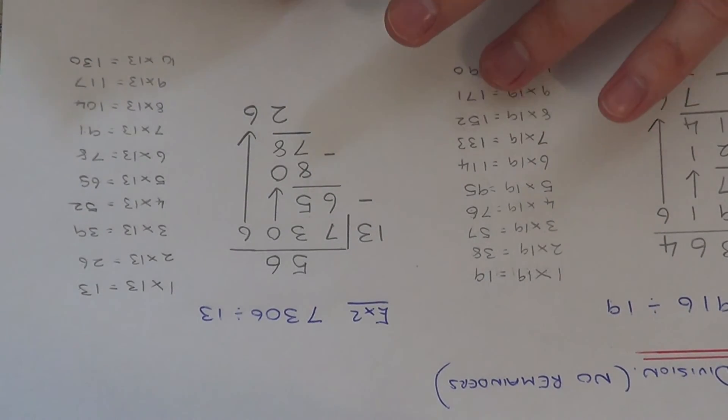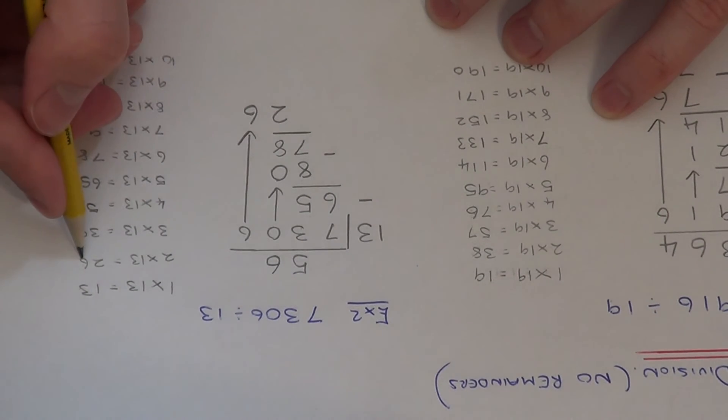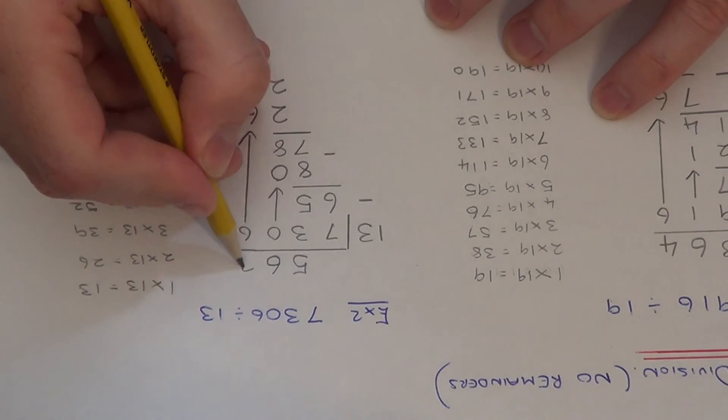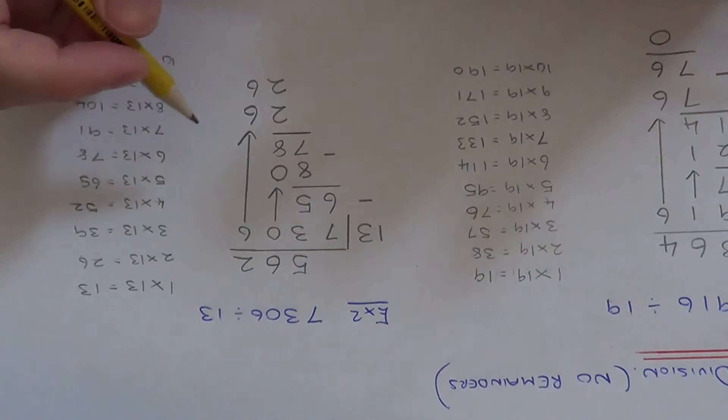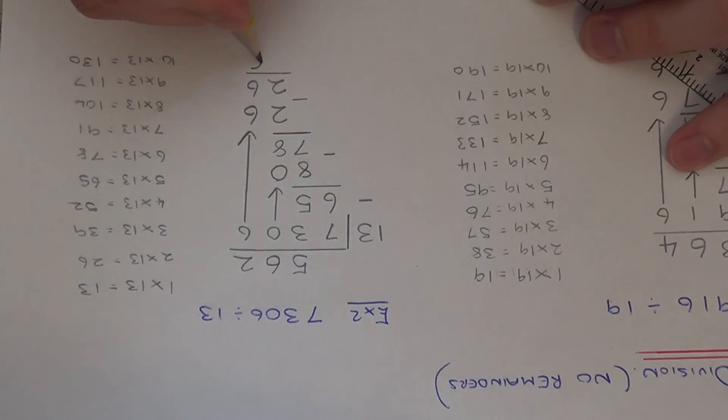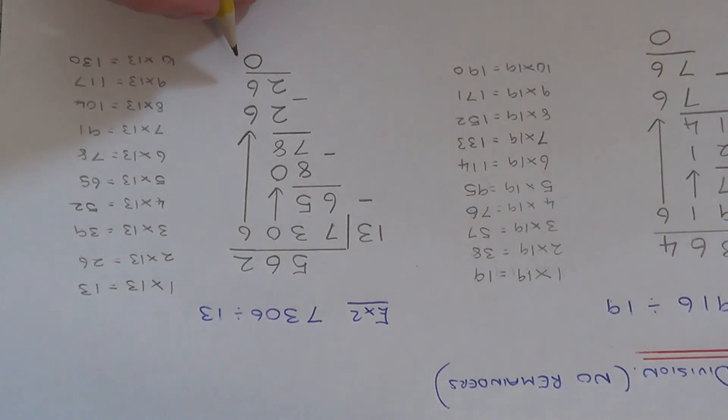So now we just need to do 26 divided by 13. So as you can see 2 times 13 is 26. We've got 26 there, write the 2 at the top. So if we take these away, as expected we get 0 as the remainder. Thanks for watching.